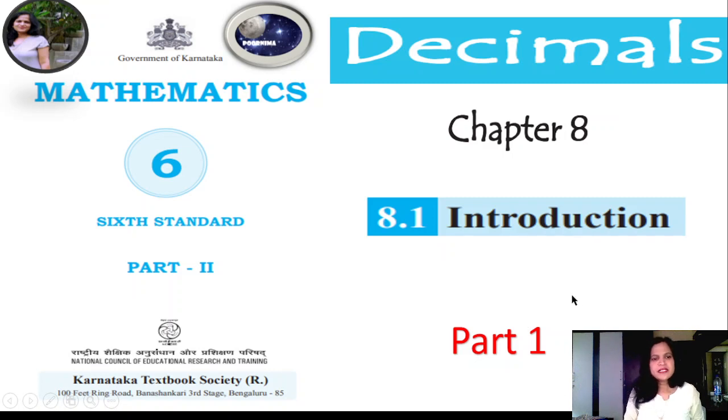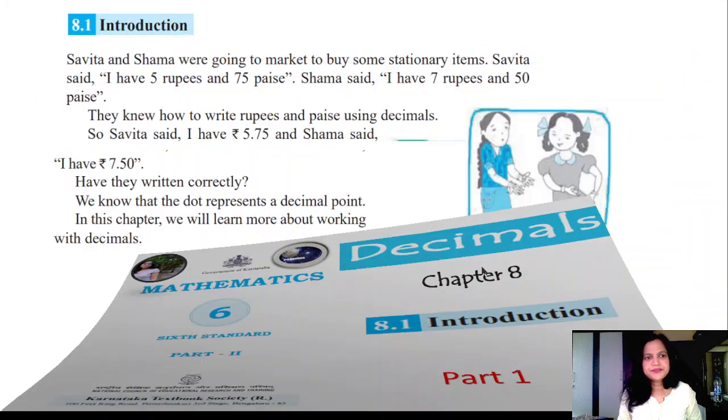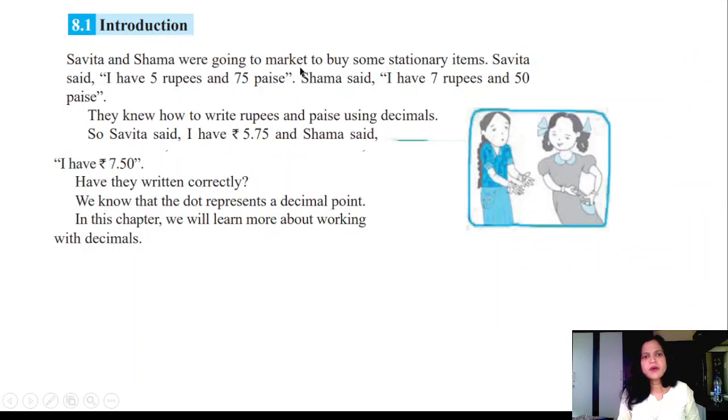Welcome to Mathematics 6 Standard Part 2, Chapter 8: Decimals, Introduction Part 1. Savitha and Shama were going to market to buy some stationary items. Savitha said I have 5 rupees and 75 paise. Shama said I have 7 rupees and 50 paise.